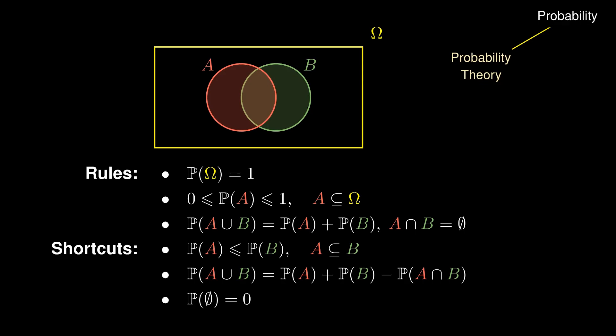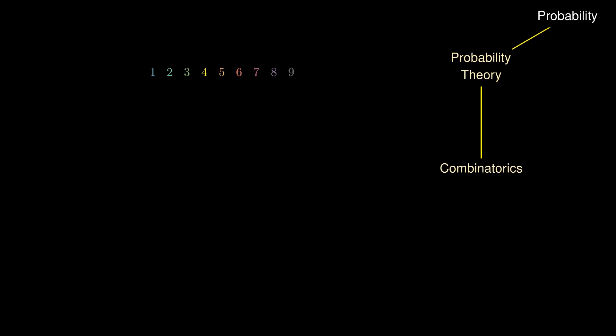These are really useful notions of probability, but when do we actually see them in practice? An elementary example can be found in the study of combinatorics. Consider the digits 1, 2, 3, 4, 5, 6, 7, 8, 9. How many 9-digit numbers are there?